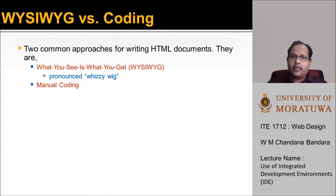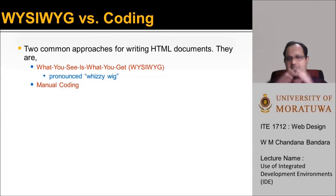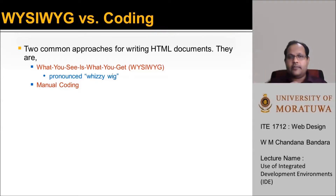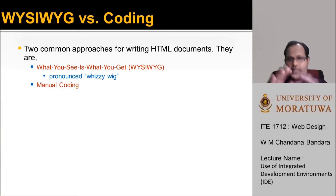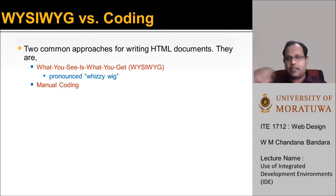On the other hand, in a manual coding environment, you will have a text editor and a browser separately. Once you've done your coding in the editor, you have to save it, open up the browser, and refresh the web page to see the outcome.